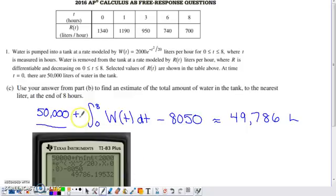To figure out how much water there is in the tank at the end of the eight hour time frame, we're definitely going to have to consider how much we started with, 50,000. We're going to add on how much water enters the tank from time zero to time eight by integrating the rate that water enters, and then subtract off how much water leaves the tank over the course of that time frame. That was our result from part B, 8,050 liters leaving the tank as our estimate from hour zero to hour eight.